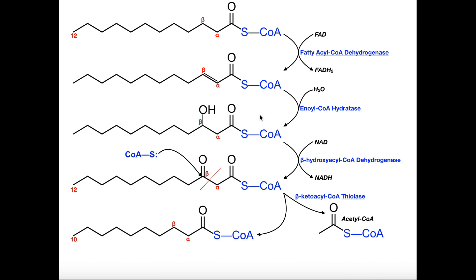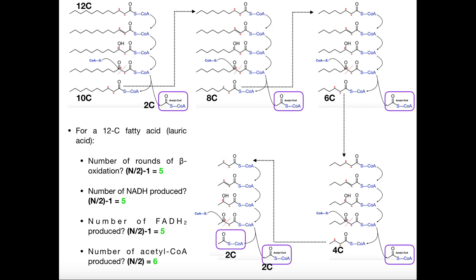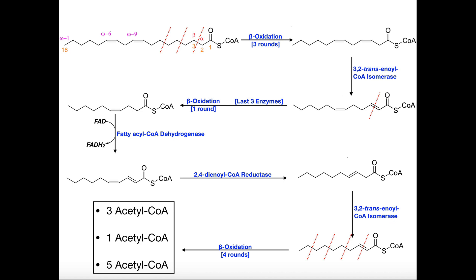For most biochemistry courses, you need to memorize these four enzymes and know which ones produce FADH2 and NADH, and note that acetyl-CoA is produced in the last step. What's important to understand is that this process is very repetitive — it just repeats over and over again. The product of one round of beta-oxidation is the start point for the next round. In the next video, we'll discuss what happens with unsaturated fatty acids, and after that, odd numbers of carbon atoms.